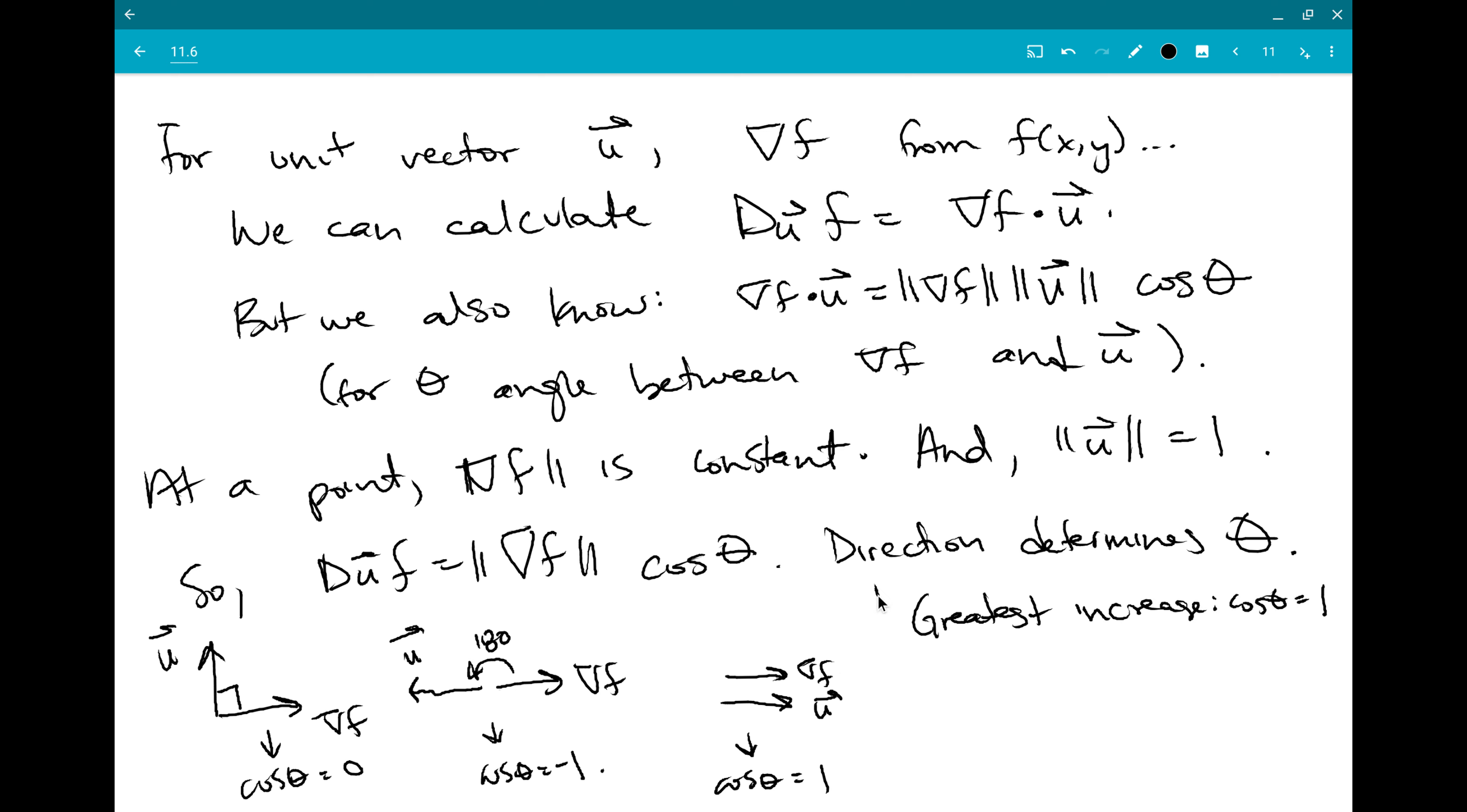So, to get that greatest increase, to make this number as big and positive as possible, we want cosine theta equals 1. Or u in the direction of grad f. And that's just going to give us that the directional derivative is the magnitude of grad f.